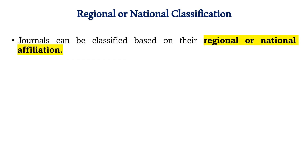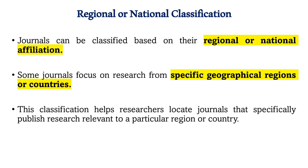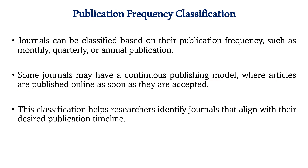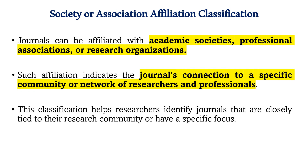Journals are also classified on the basis of regional or national classifications. There are a number of journals that publish articles based on studies conducted for a specific geographical region, country, or area. Additionally, journals can be classified by publication frequency — monthly, quarterly, half-yearly, annual — and some journals use a continuous publication model where articles are published as soon as they are accepted.